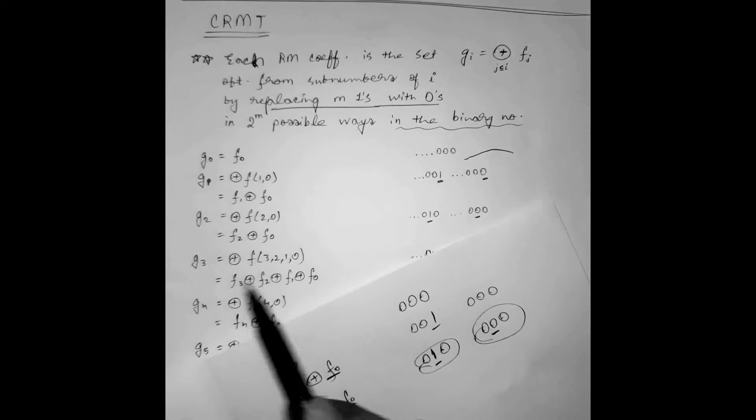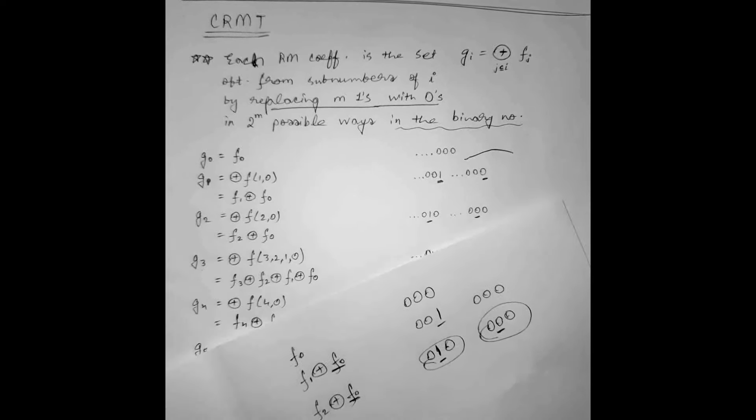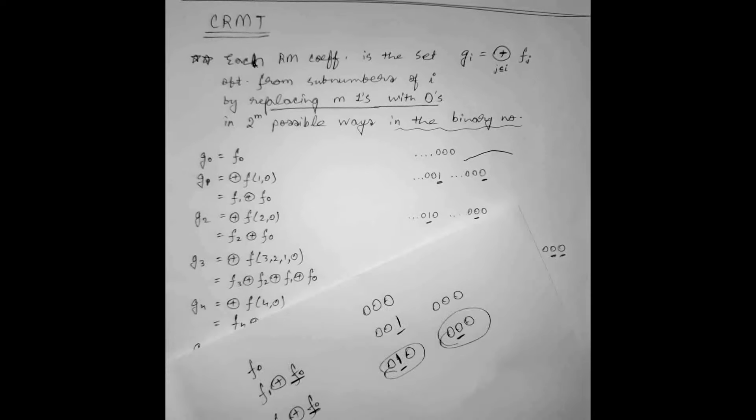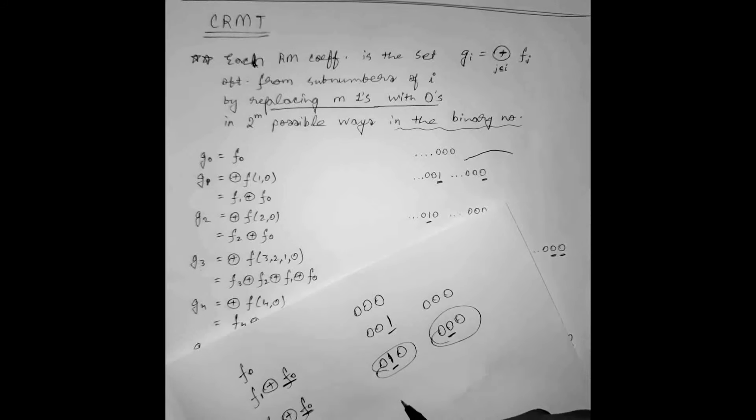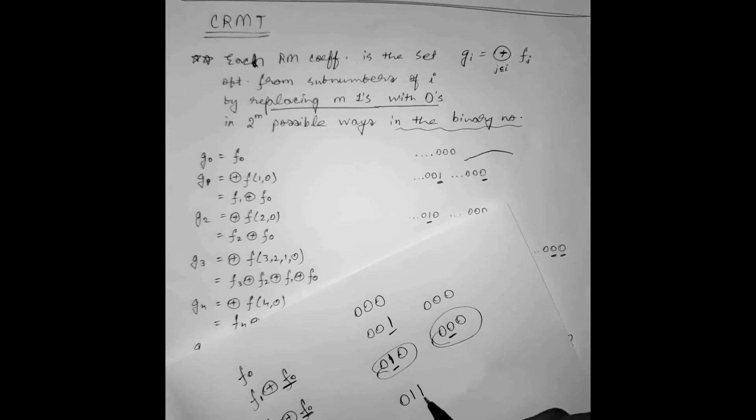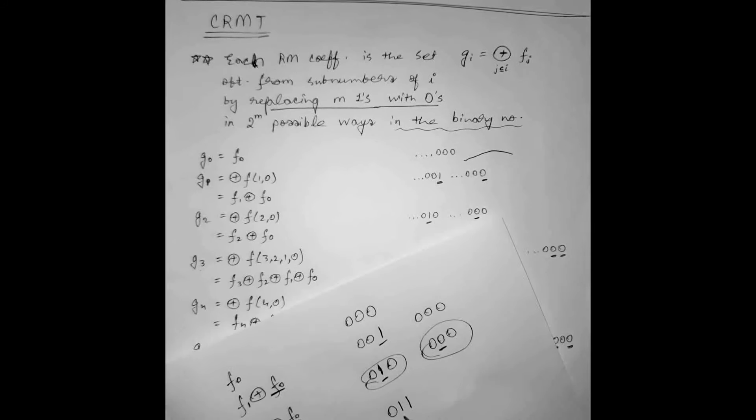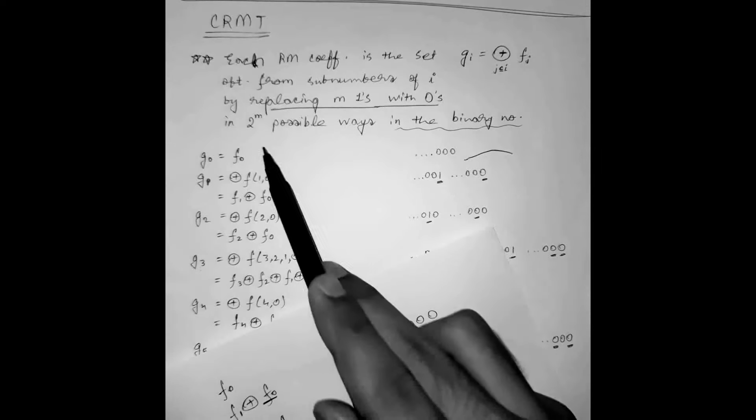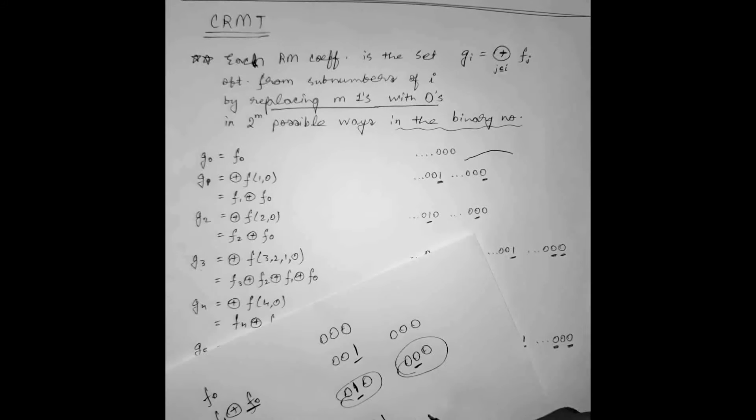Again G3. F3 will come XOR again blank. First we will study 0, 1, 1. It is for 3. Now we have 1 at 2 places. We have to replace M ones with zeros in 2 to the power M possible ways.